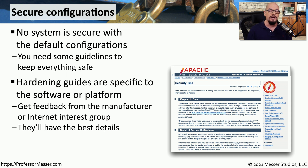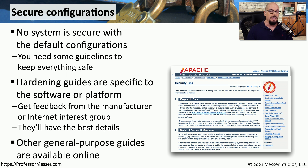This usually comes directly from the manufacturer or the developer of the software. You can often find additional security measures on internet interest groups. For very complex software or implementations, you may also find websites and blogs that have detailed security information for the product that you're using.